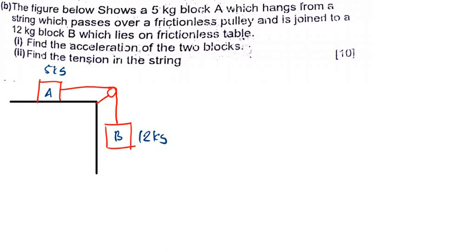Let's dive into Newton's laws of motion - the pulley system. I'm first going to explain everything you need to understand about the pulley system. The best way is to pause the video, try to solve it, and then see how I solve it. When talking about pulley systems, in this case there is no friction at all. The question shows a 5 kg block A which hangs from a string passing over a frictionless pulley and is joined to a 12 kg block B which lies on a frictionless table.